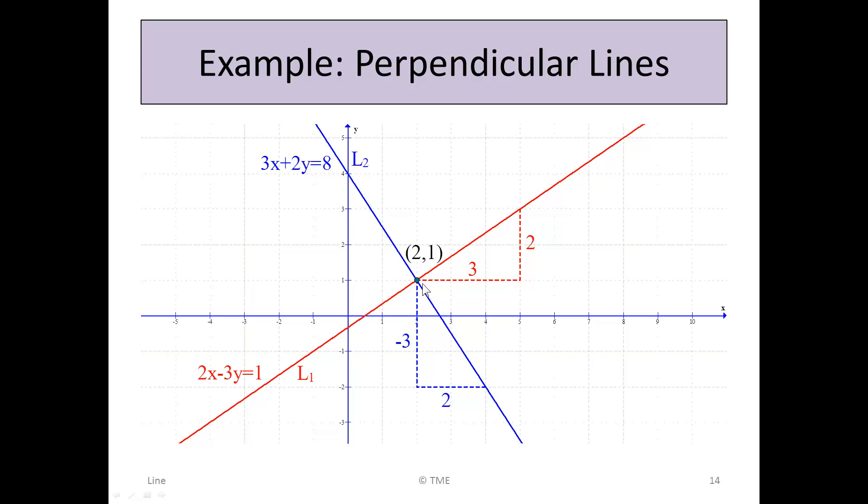Looking at the slopes: for the red line, you go out 3 to move up 2, so the slope is 2/3. For the other line, as you go across 2, you drop 3, so the slope is -3/2.